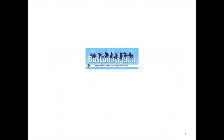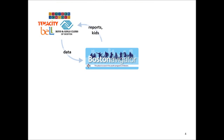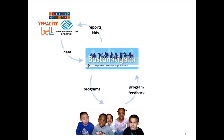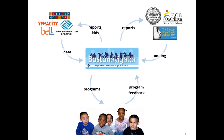So who are the key stakeholders that make Boston Navigator successful? First, we have the program providers, who are giving information about their program into the Boston Navigator website. In return, they are hoping to get more youth signed up for their programs, as well as reports and information on the afterschool and summer sectors. We also have the families who are looking for programs for their children, and hopefully we are capturing the program feedback of their experiences. Finally, we have other key stakeholders and funders who are providing the resources necessary to make Boston Navigator and programs run, and they are interested in looking for reports on the sector.